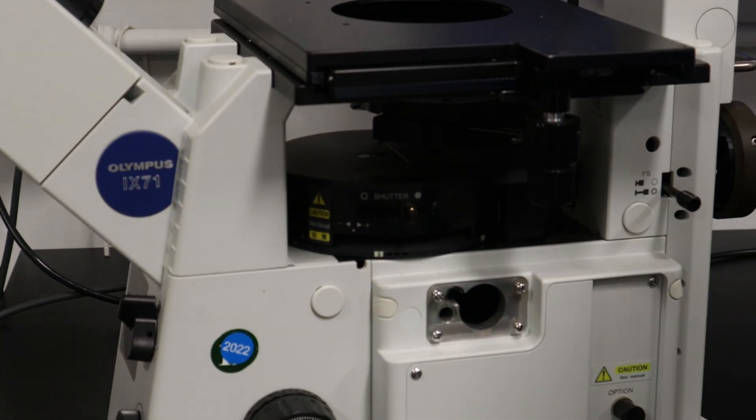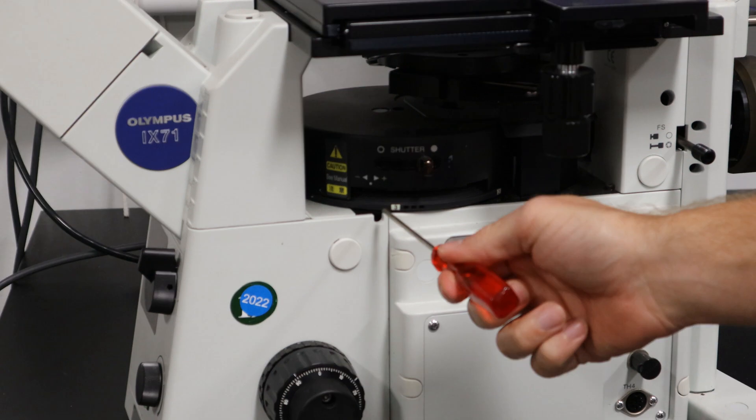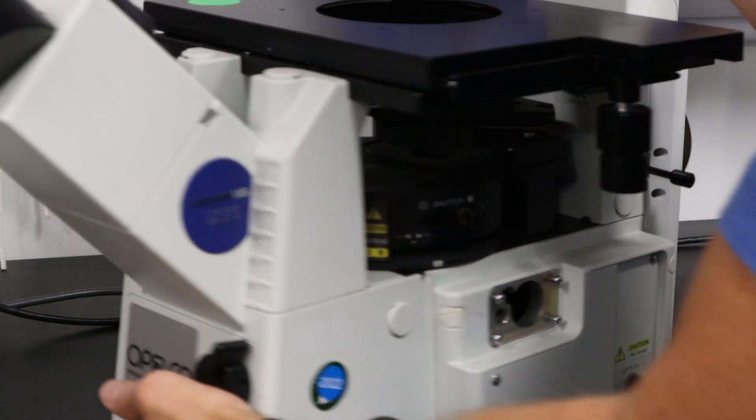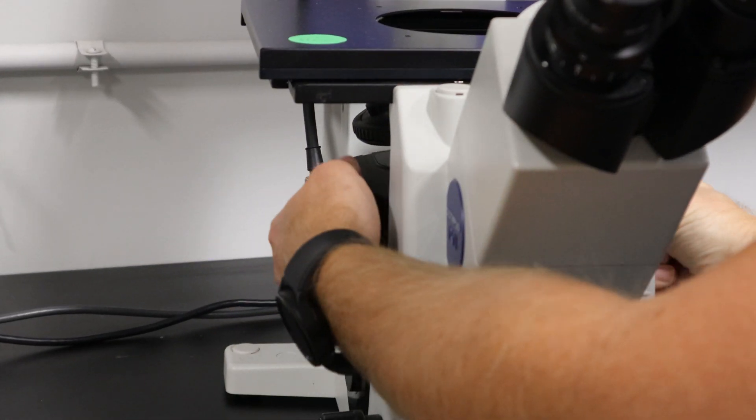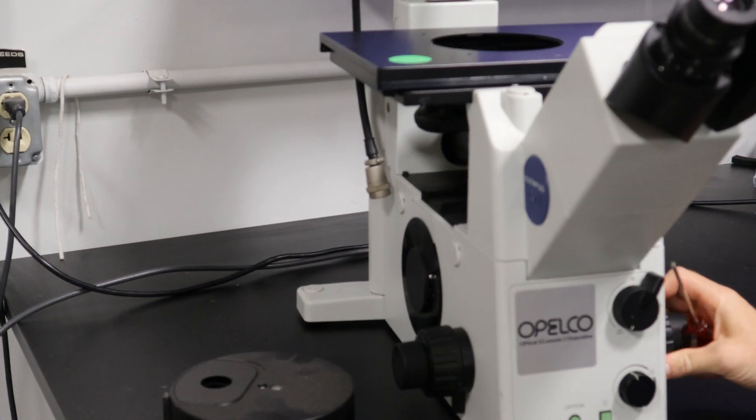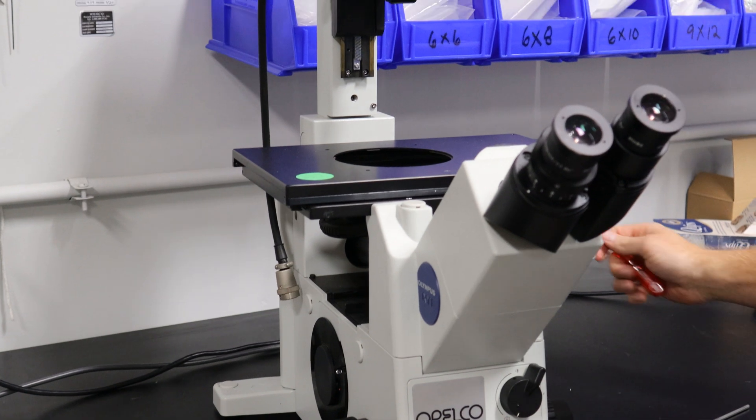First, we're going to take out the fluorescent cube turret. Right here on the right side of the system, you'll put a three millimeter Allen wrench and loosen that screw that's in there, and then this will push right out. Sometimes it'll get caught on the focus, so make sure the focus knob is all the way up and the nose piece is all the way up there.